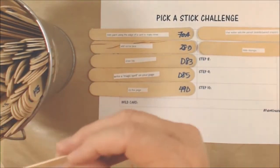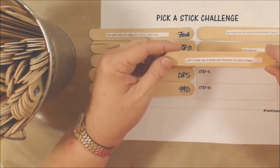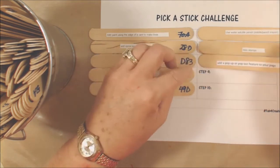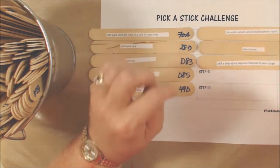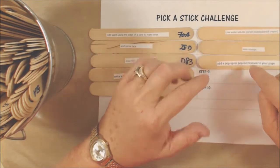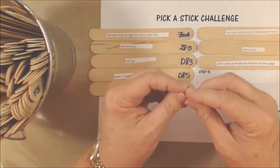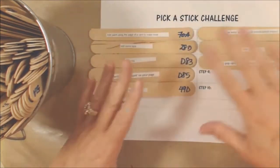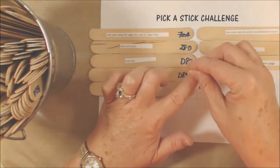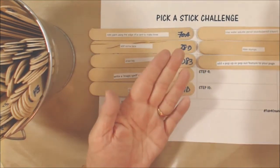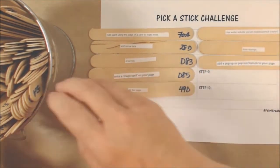Step number eight, oh dear, add a pop-up or a pop-out feature to your page. So just like what it sounds like. If you want to do something that's like a little accordion fold and attach it to your bigger page so that then it pops up off of your main page, or if you want to make something that folds open and it's got a pop-up in it, anything like that.